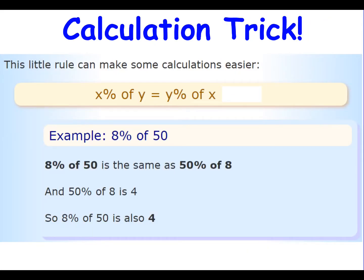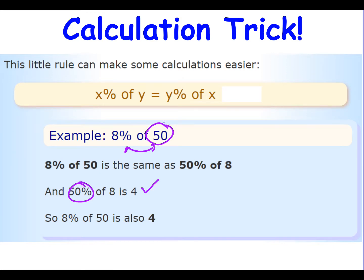There is a trick you may want to use: when you have x% of something, it's equivalent to that something percent of x. For example, 8% of 50 is the same as 50% of 8, which is 4, because 50% is just halving. Sometimes it's easier to switch if one of the numbers is a nice round number like 50 or 25, which is easy to work with as fractions.